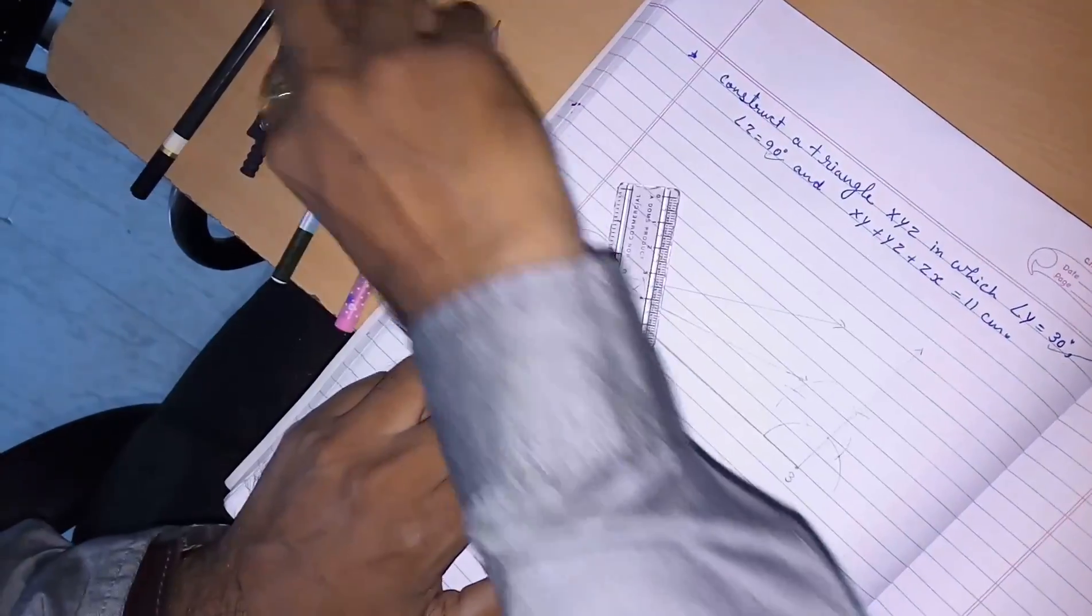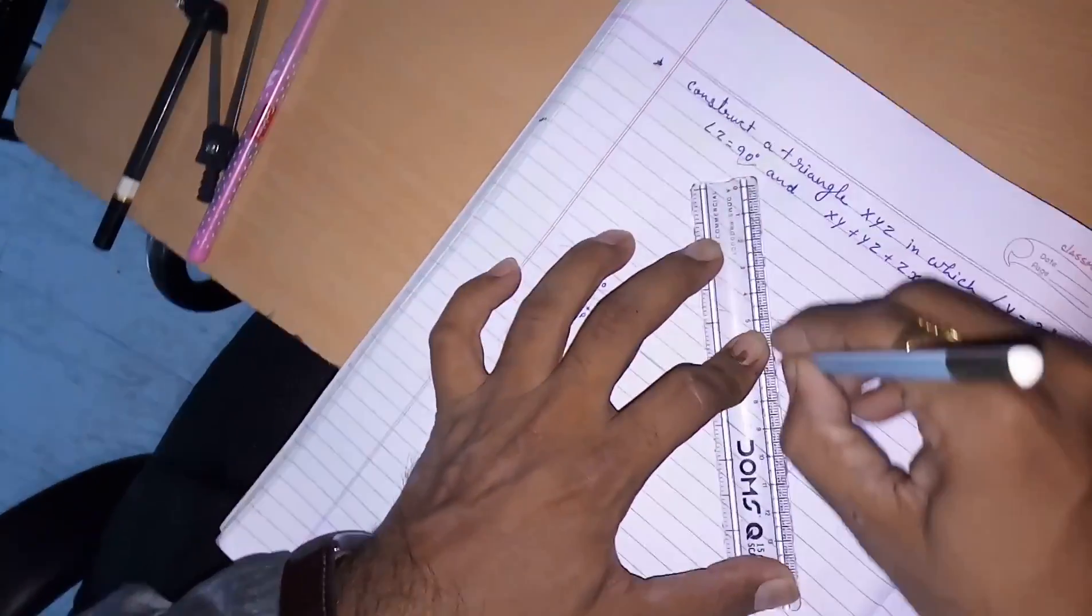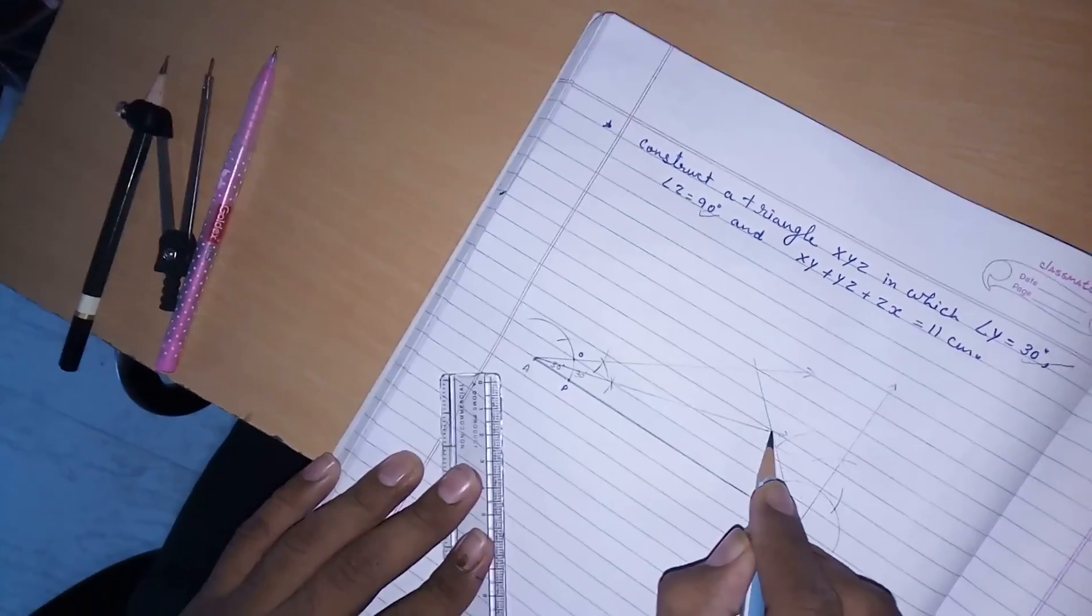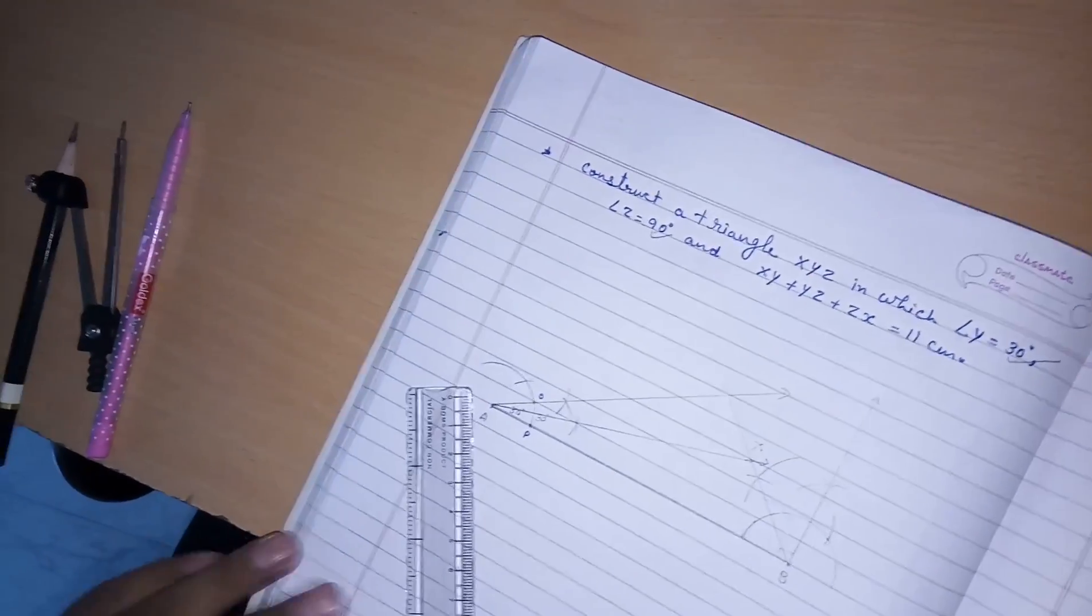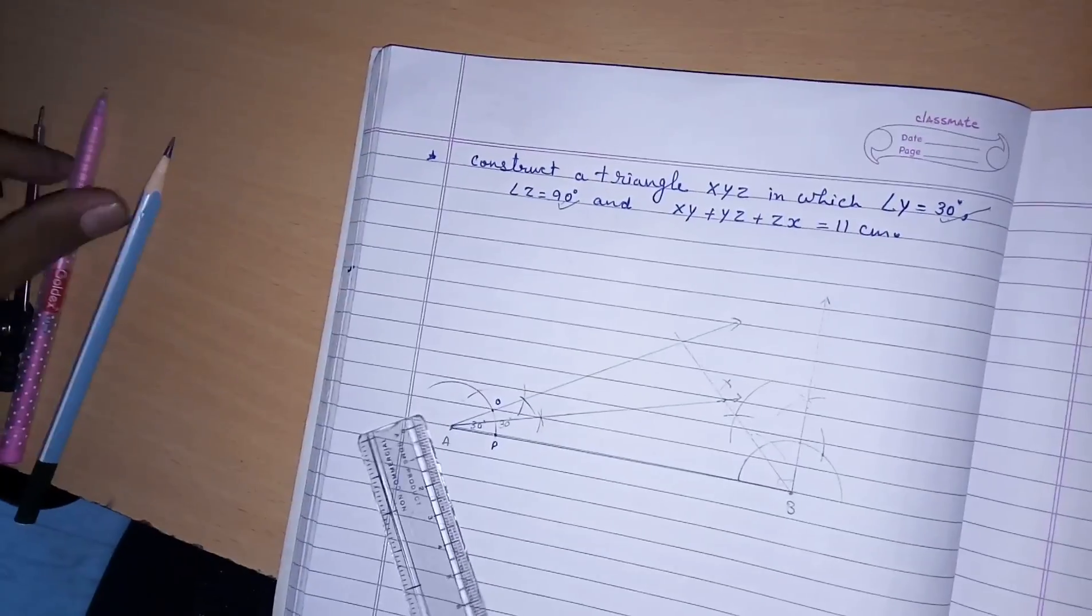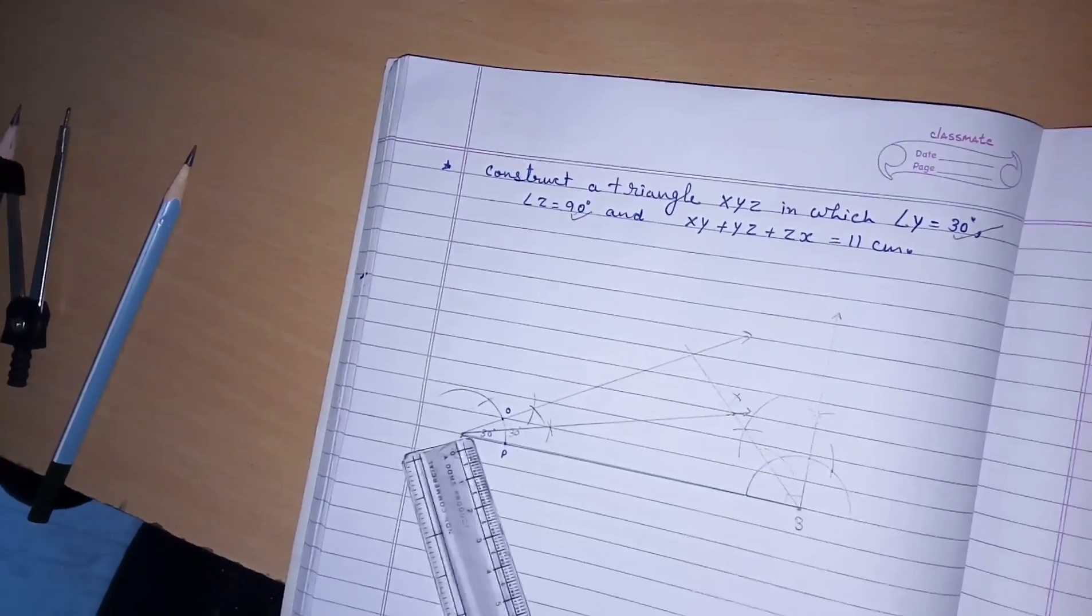So, we will get a line like this, where both the bisectors are intersecting, that is our first point X. Then we will move towards finding perpendicular bisector of X and A.